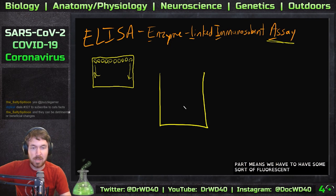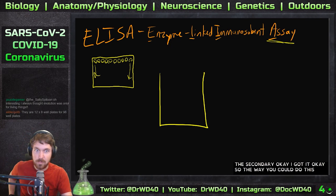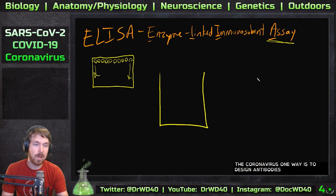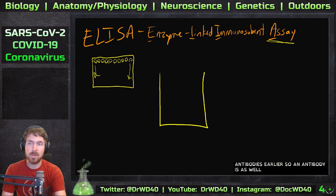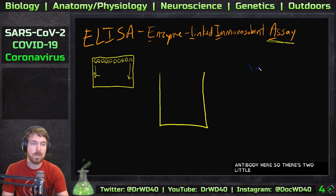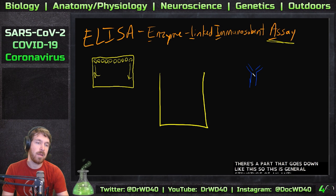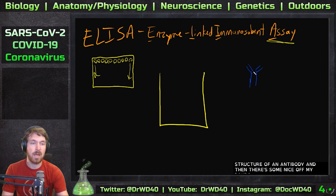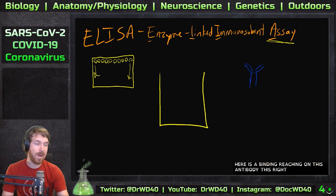For the assay, you first have to have antibodies. Here's the primary antibody — it has two little arms at the top and a region going down. This is the general structure of an antibody, held together by disulfide bonds. The binding region is up here on the antibody.